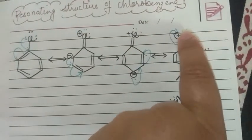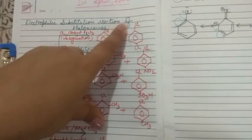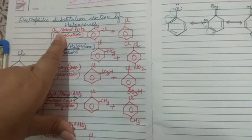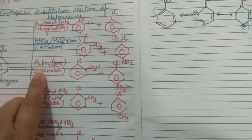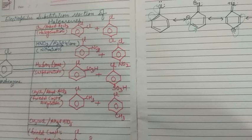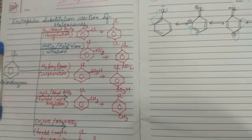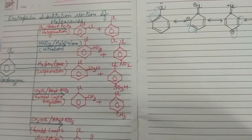This is also an ortho position with respect to chlorine, so the electrophile will come and attack on the ortho position. That is why in all these reactions — electrophilic substitution reactions of haloarenes — during halogenation, chlorine attacks at ortho and para; in nitration, the NO₂ group attacks at ortho and para; in sulfonation, the sulfonic group attacks at ortho and para; in Friedel-Crafts alkylation, the alkyl group attacks at ortho and para; and in Friedel-Crafts acylation, the acyl group attacks at ortho and para. The ortho and para positions are electron-rich sides, and electrophiles always attack at positions which are electron-rich in nature.